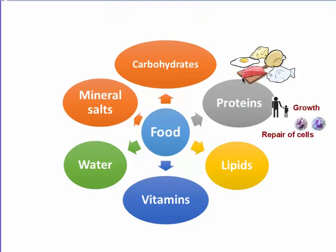Proteins can be found in animal sources or plant sources. Animal sources include meat, beef, chicken, fish, eggs, etc. Plant sources include legumes and beans. Proteins are important for growth, repair of damaged cells, and for the production of other body proteins like hormones, enzymes, and antibodies.